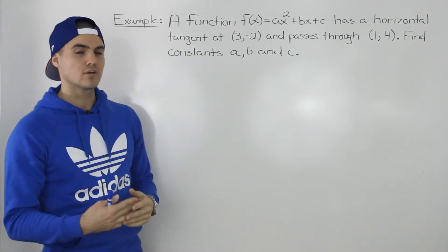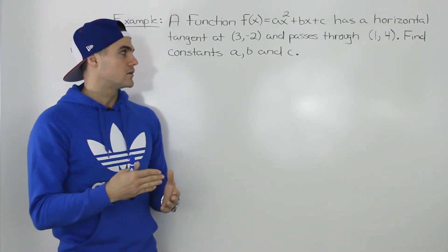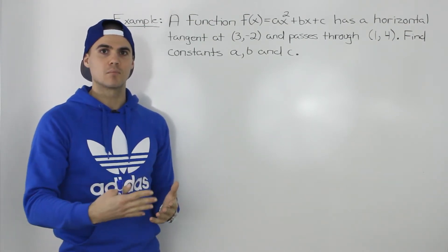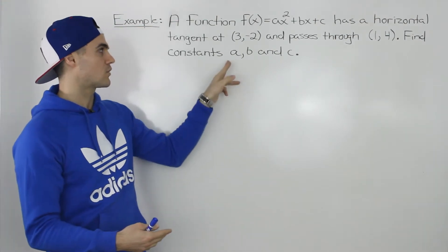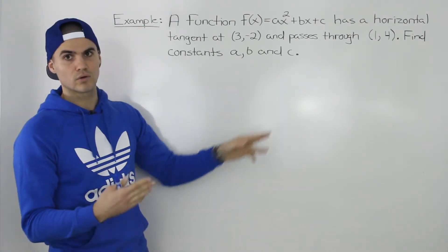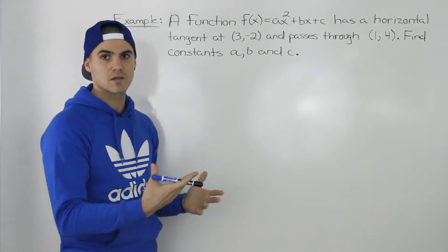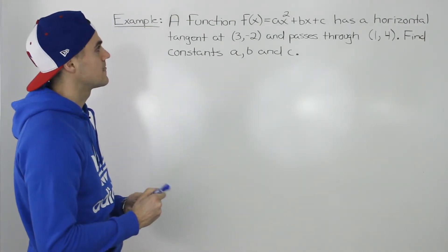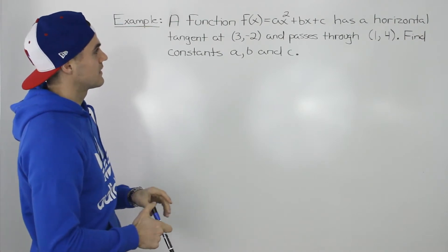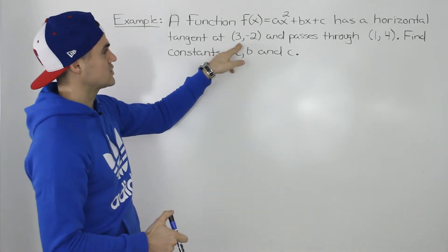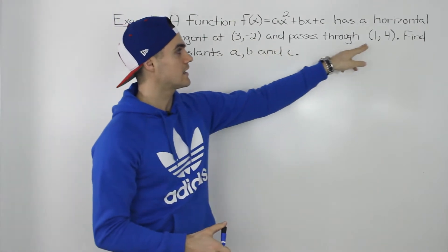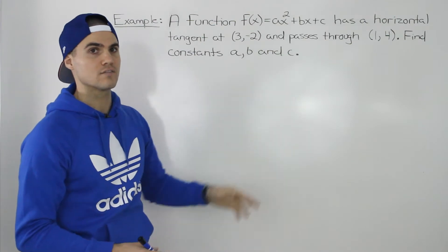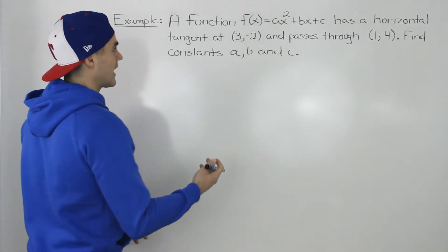Now whenever you're finding constants, usually the number of constants you're finding you're going to require that same number of equations. So we're finding three constants, so we're going to need three equations, and then we can do substitution, elimination, etc. to solve for those constants. We have this function and it has a horizontal tangent at this coordinate and it passes through this coordinate, so that means both of these coordinates are on the function, and we can make two equations like that.